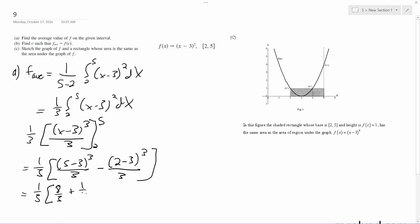And we end up with one third times nine over three, or just three, and we end up with one. So the function average is equal to one.